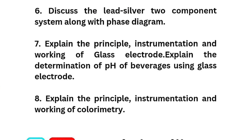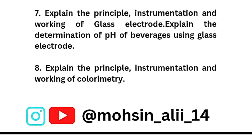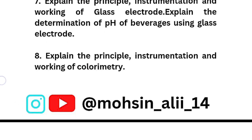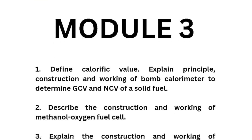Fifth: Explain the principle, instrumentation, and working of potentiometric sensor. Sixth: Discuss the lead-silver two-component system along with the phase diagram — this is again the most important question. Seventh: Explain the principle, instrumentation, and working of glass electrode, and explain the determination of pH of beverages using glass electrode. Last question from module 4: Explain the principle, instrumentation, and working of colorimetry.